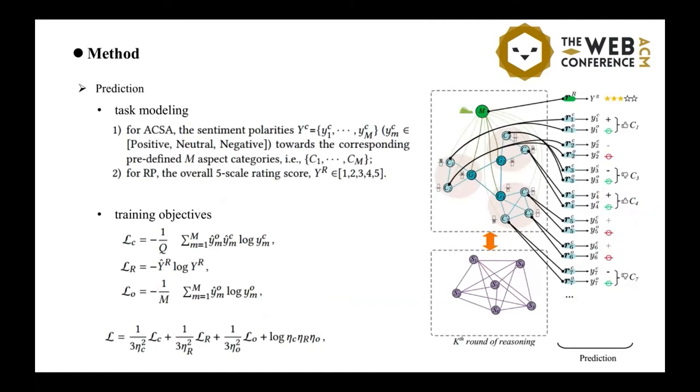As we marked here, we have two sub-tasks to predict: one for the fine-grained ACSA, and one for the RP, the overall sentiment rating.